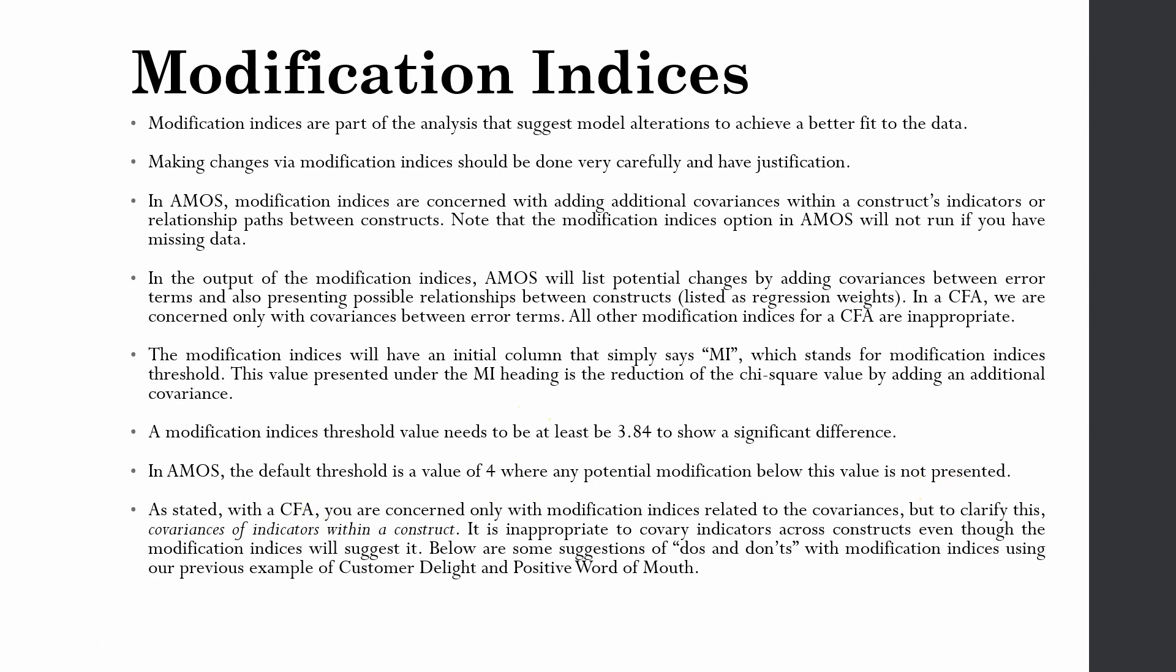In AMOS, the threshold is 4, where any potential modification below this value is not presented. It can give you many modification indices, but what matters is when you have the modification indices at least 3.84, and this will have a significant difference towards attaining a good fit.